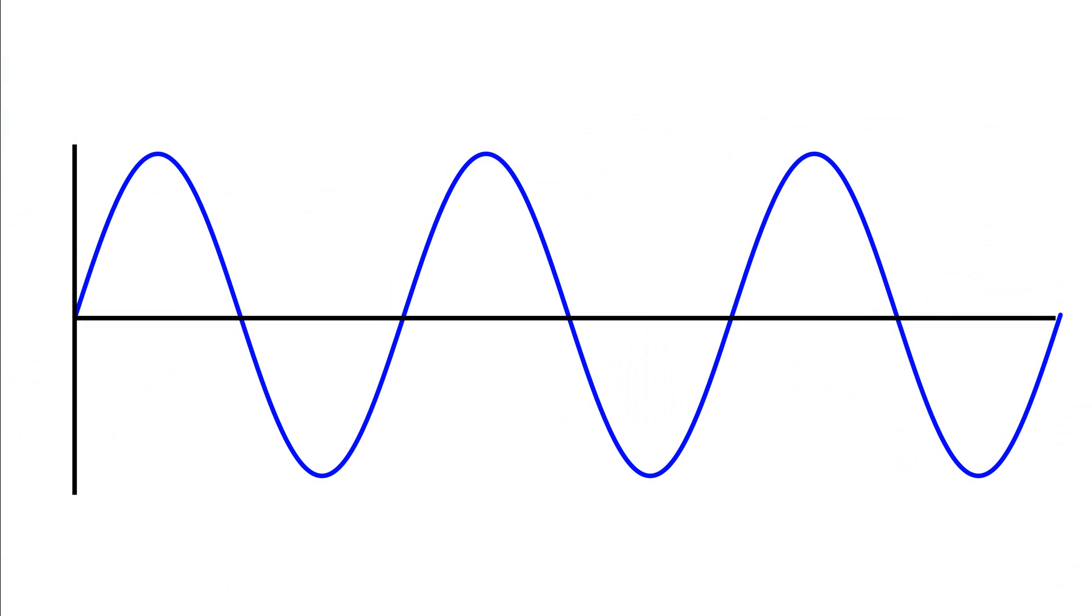So we'll look at transverse first. Here we've got a simple wave sketched out and we can imagine we've got the direction of oscillation coming up and down across the page. So this is the direction that this wave is oscillating, up and down, up and down.